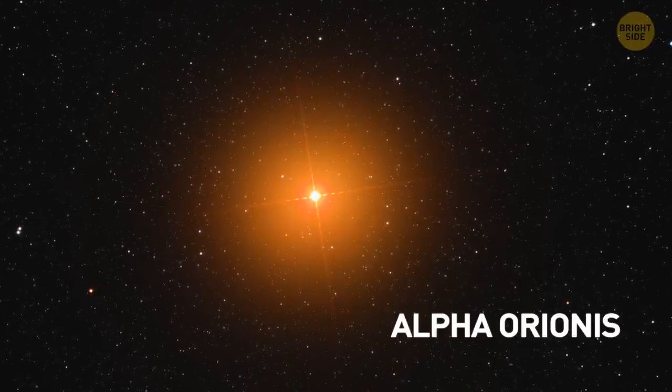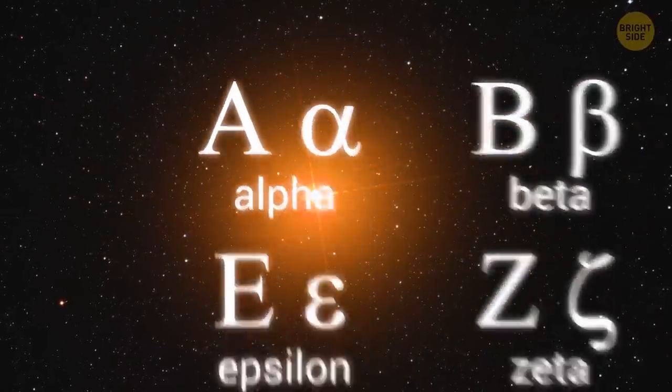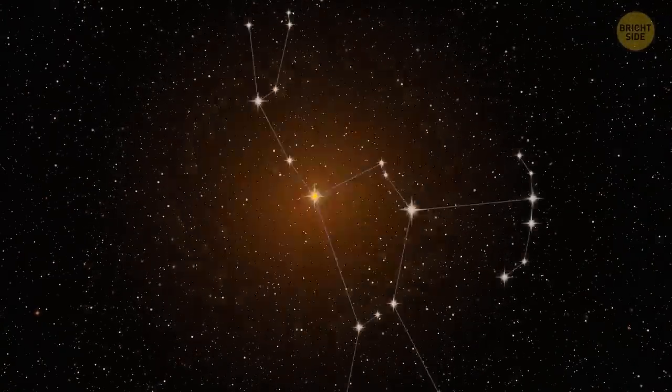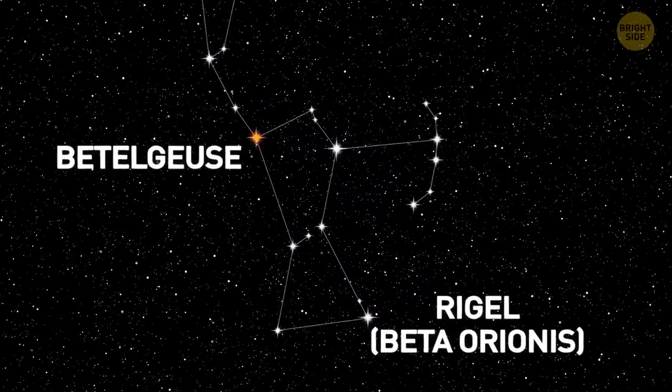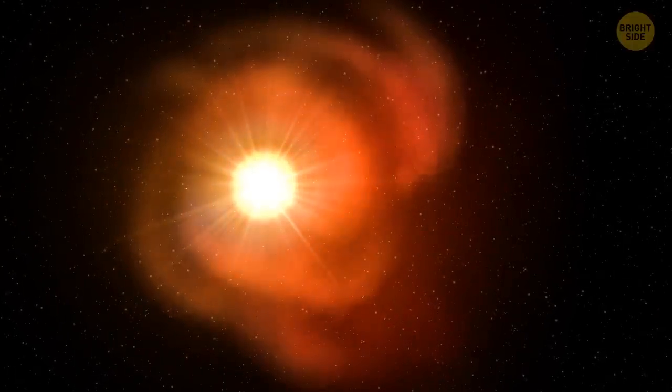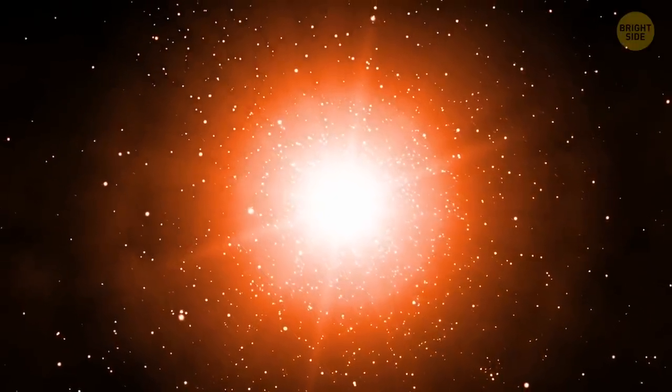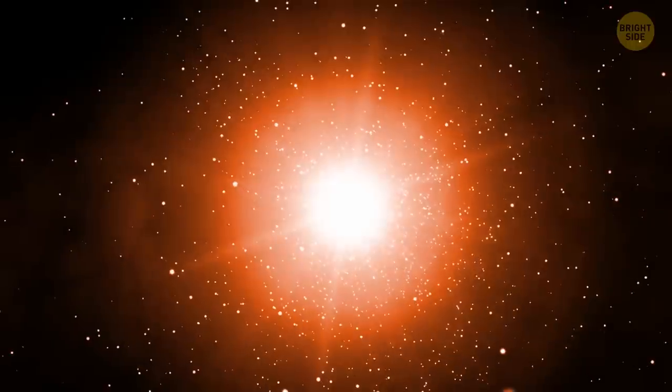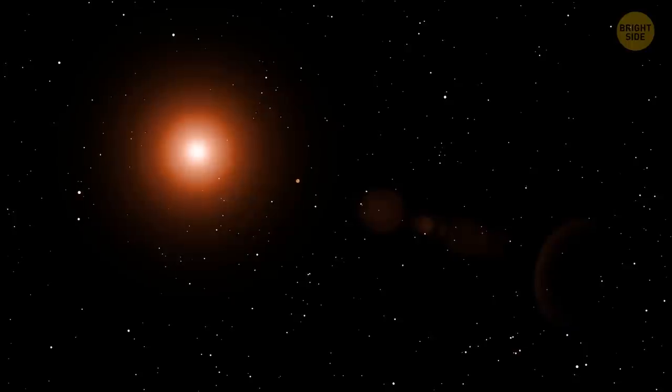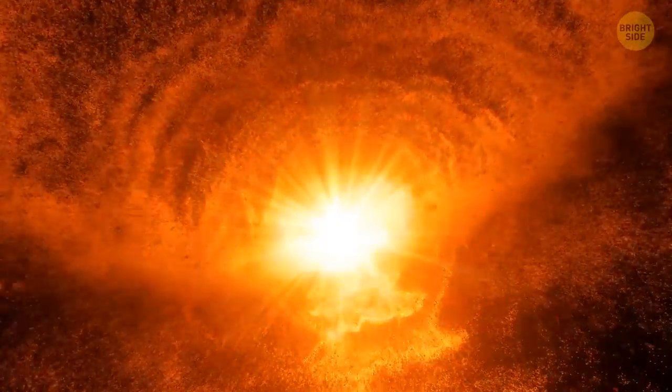Betelgeuse is also named Alpha Orionis, another Greek letter designation. So, we should conclude that Betelgeuse is the brightest star in Orion, right? Wrong. It's the second brightest star in its constellation. Rigel, or Beta Orionis, is the brightest one in that region. Figure that one out. It may be because Betelgeuse is classified as a semi-regular variable star, which sounds kind of redundant to me. Its approximately 400-day cycle of pulsation changes its brightness by about one full magnitude, going from much brighter than a first magnitude star to closer to a second magnitude star. But never was Betelgeuse observed to dim so rapidly or so drastically as it did recently.